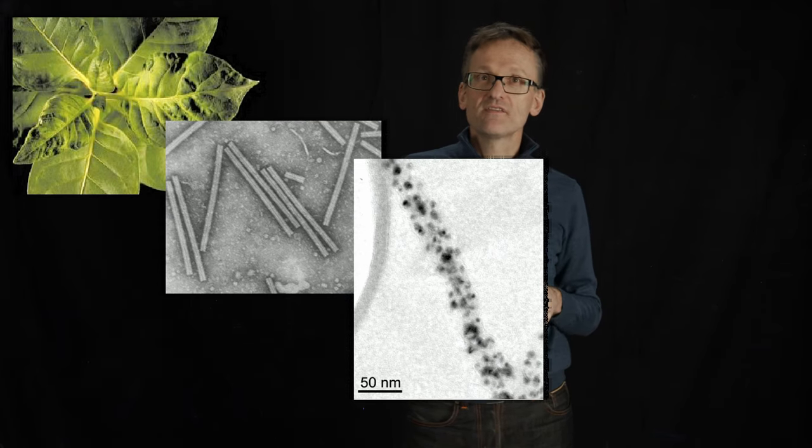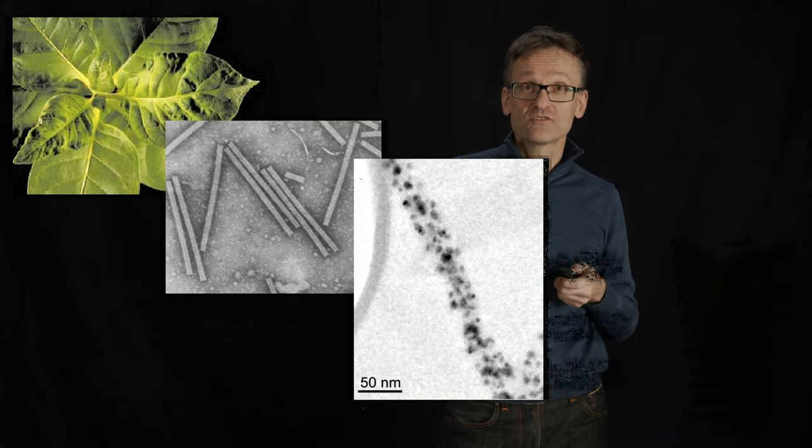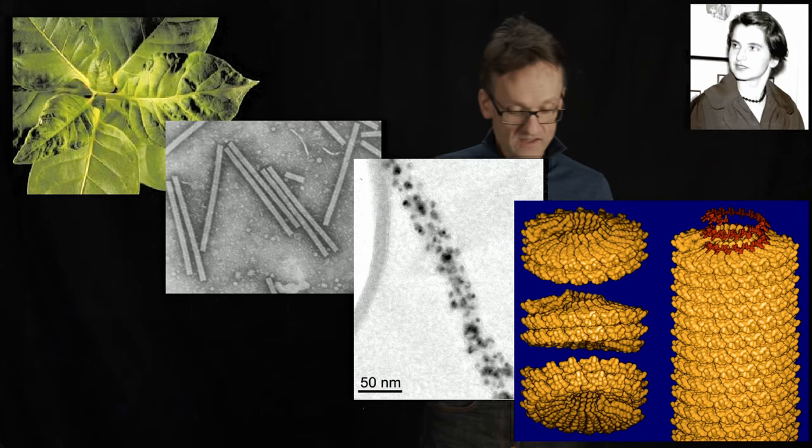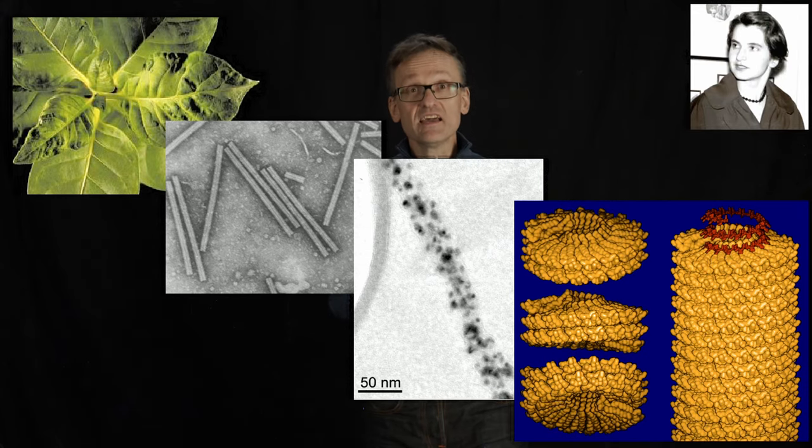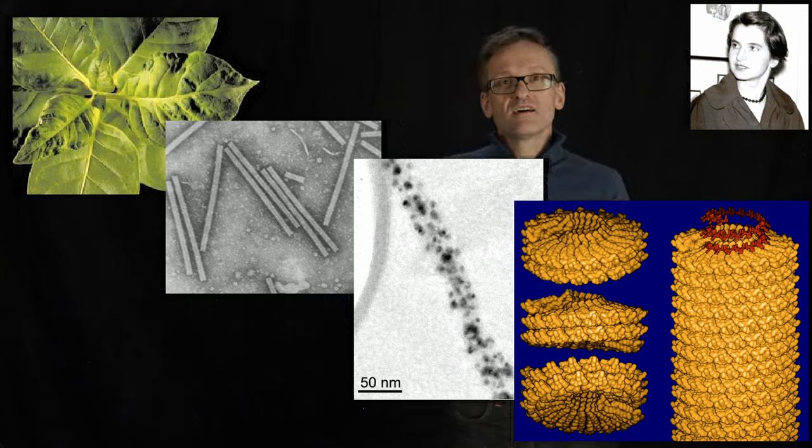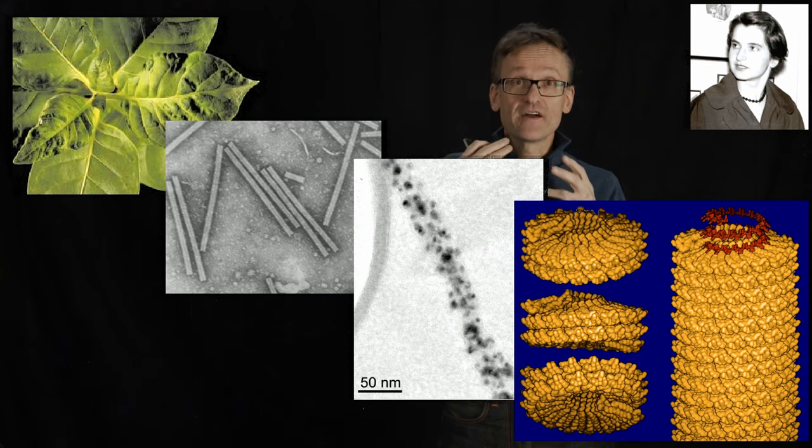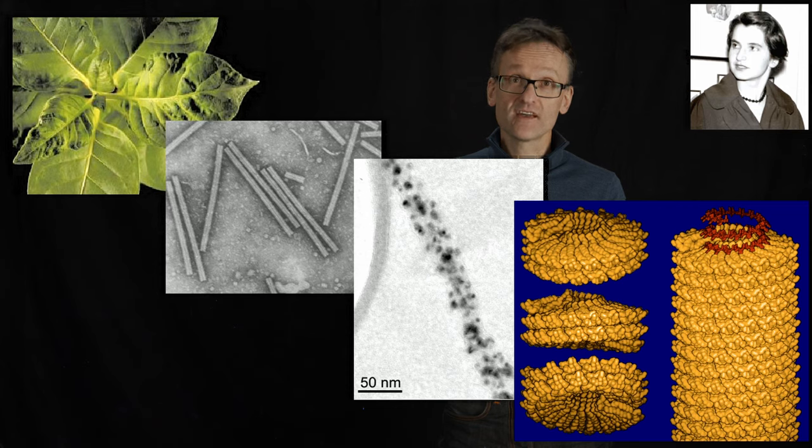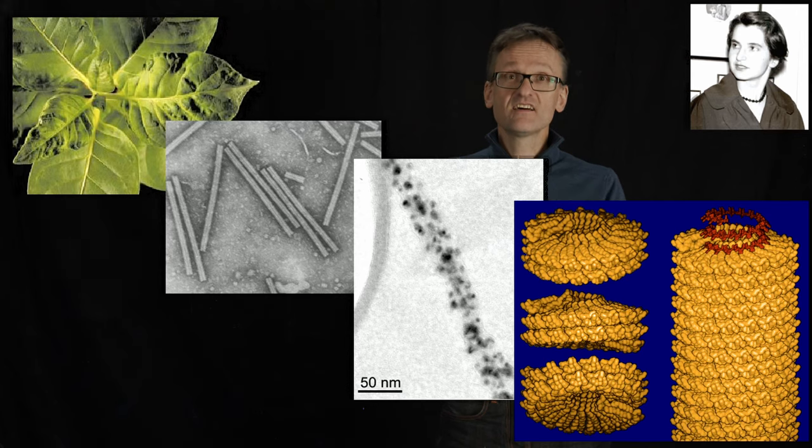If we zoom in even more on this, we will get the structure that was determined by Rosalind Franklin in 1958. This is an example of a virus where you have a coat protein, a single coat protein, and then in red on the inside you have the RNA, which is the genetic material of the virus that is delivered to the cell and then used to make the cell produce even more virus.